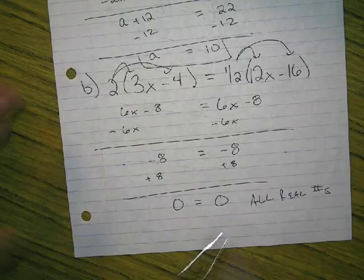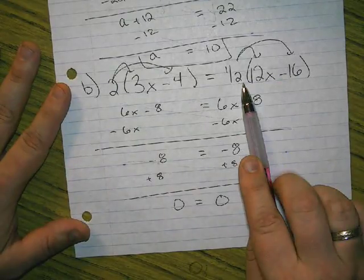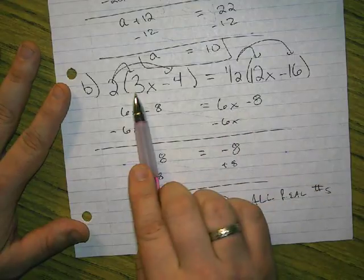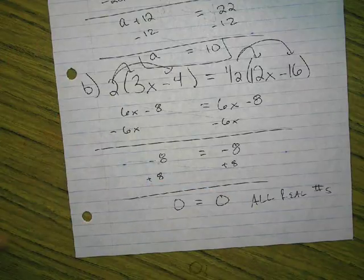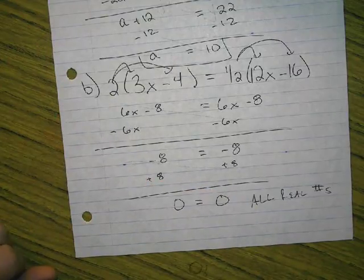But I could have just as easily put in 10. That would give me 120 minus 16 is 104, half of that is 52. If I put in 10 over here, I get 30, minus 4 is 26, doubled is 52. No matter what you put in, it works.